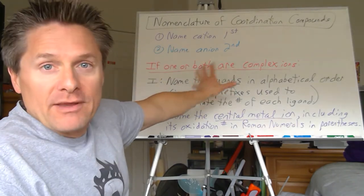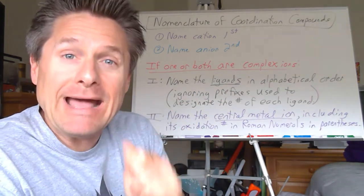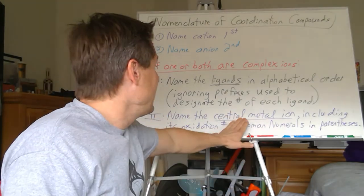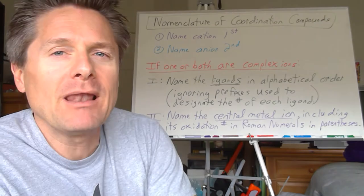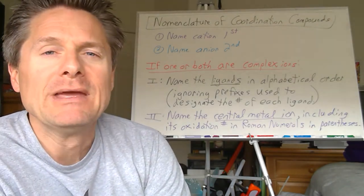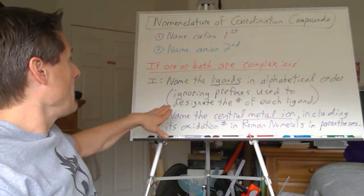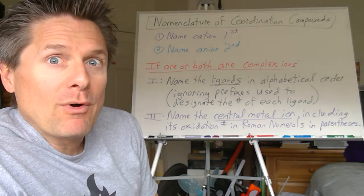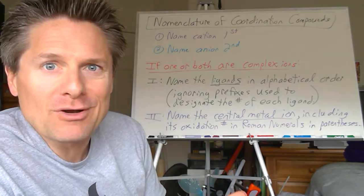Here are some basic rules. When we're naming a complex ion, we always do the ligands first and then the central metal ion second. It usually is a metal ion, but it could have an oxidation number of zero and be neutral. Most of the time it's going to be an ion. When we name the ligands, we have to alter the name — so chloride is no longer chloride, nitrite is no longer nitrite.